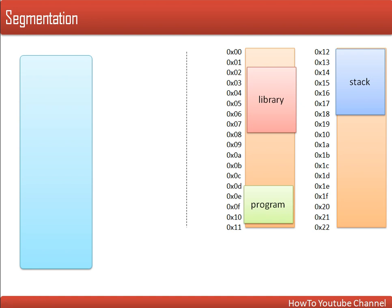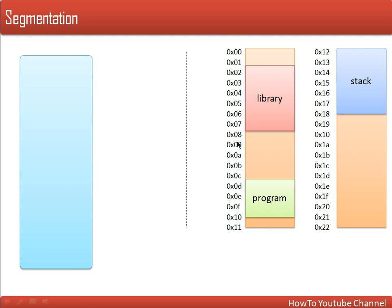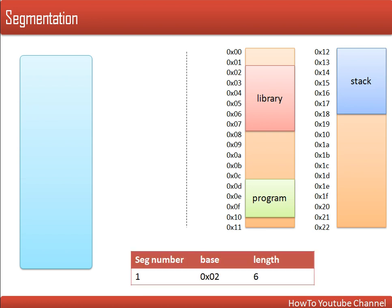Segmentation follows this approach. Now, how is an element in segmentation going to be addressed? How are addresses generated and converted into physical addresses? Every segment has a name. If I want to access any particular byte in a segment, I need to provide the name of that segment — for example, the library segment — and also specify the offset, like which byte I want to access. So two pieces of information are needed: segment name and offset. For simplicity, instead of names, a number is assigned to every segment.